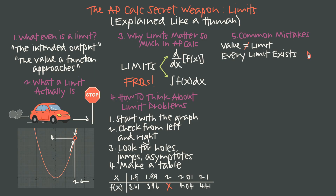We also can't assume that every limit exists. Sometimes the limit does not exist — DNE. This happens when the left-hand limit is different from the right-hand limit. In that case, there is no general limit. Check your limit from the left and your limit from the right; if the graph isn't approaching the same value from both sides, conclude that the limit does not exist.